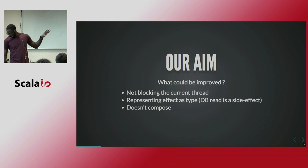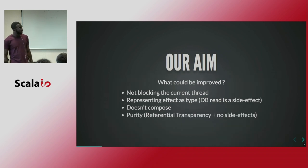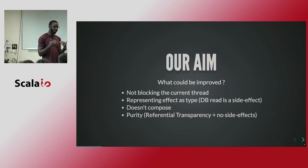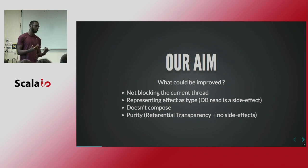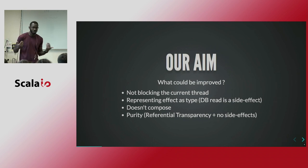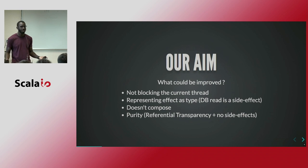And the last thing is that when we are reading from a database, this is a side effect — so this breaks referential transparency. The 'one' method is not pure, right? And what we want is to get our purity property back. I'm a pure developer. I want my purity back, right?